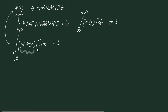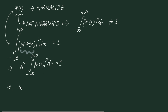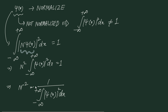This means N²·∫₋∞⁺∞ |psi(x)|² dx = 1, so N² = 1 / ∫₋∞⁺∞ |psi(x)|² dx. This gives us the normalization constant squared. Let me illustrate with an example of a particle in an infinite potential well.